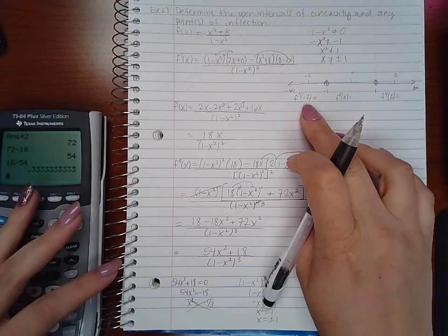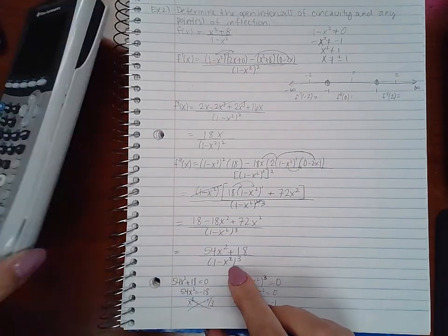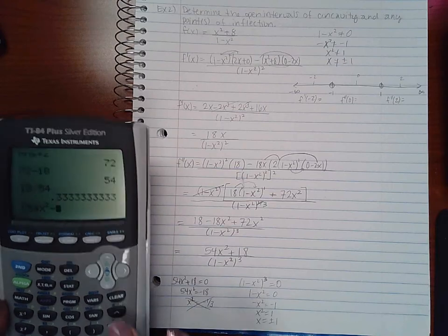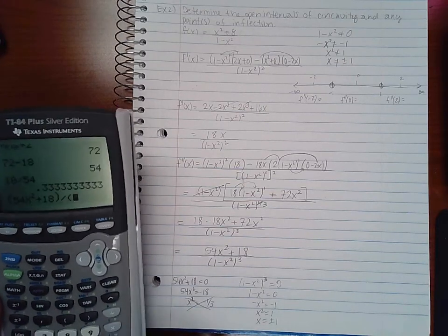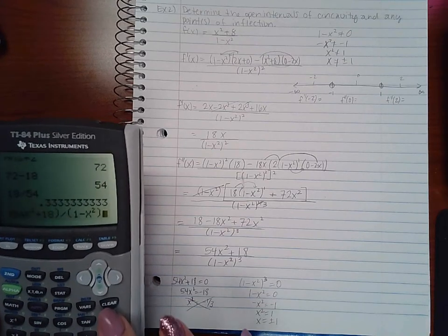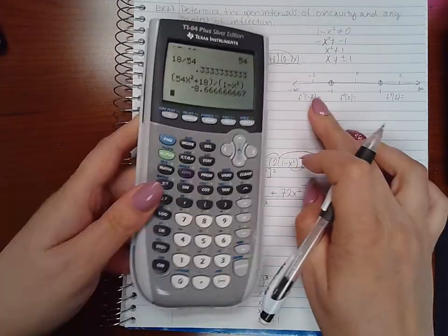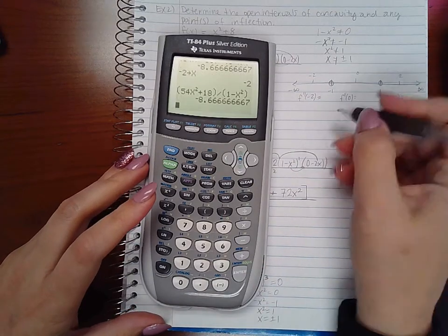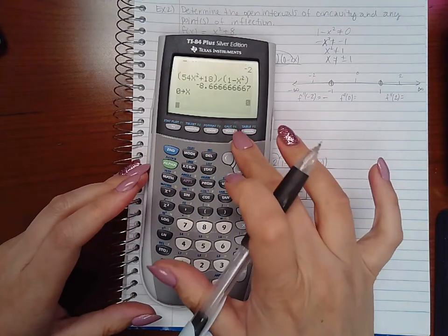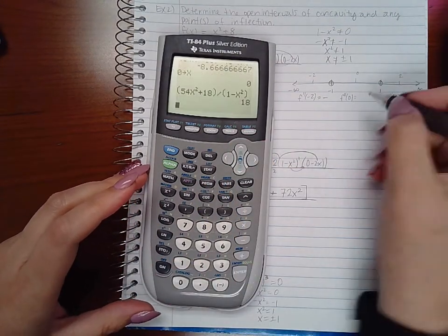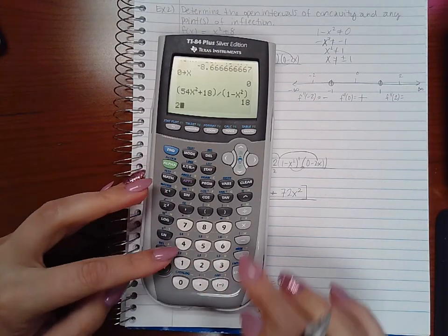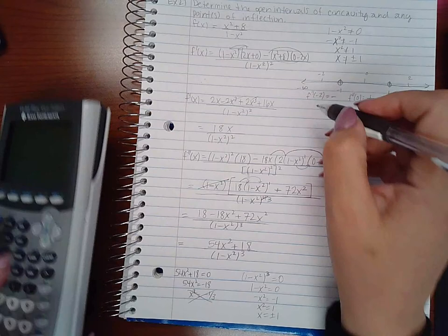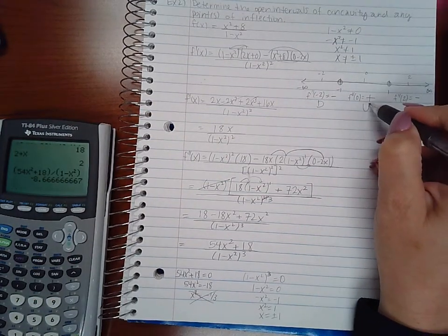So let's go plug in these values into our second derivative. I'm going to program my calculator with this function: -54x² + 18 divided by (1 - x²) raised to the third. Let's plug in negative 2, store x, plug in my function, and I get a negative value. 0 store x, and I get a positive number. And then 2 store x, and I get a negative number.